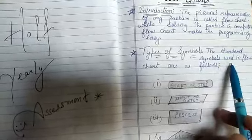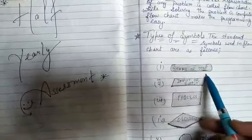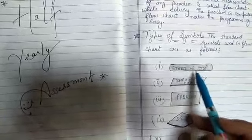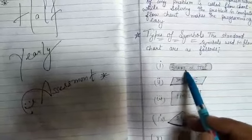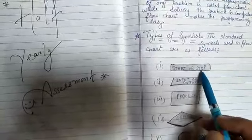The standard symbols used in flowcharts are as follows. First one is the start or stop symbol. This symbol is known as start or stop symbol, from where the problem solution or program starts or ends with this symbol.